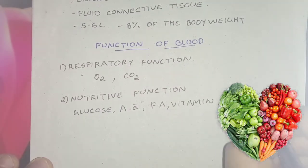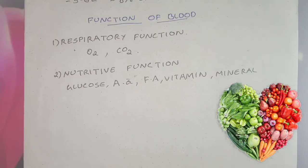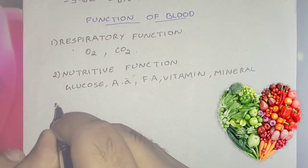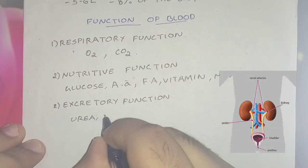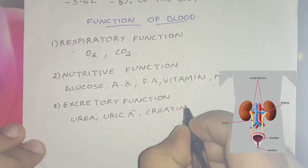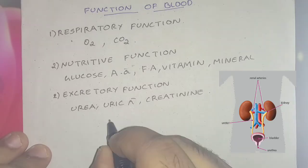The final products of digestion like glucose, amino acids, fatty acids, minerals, and vitamins are taken from the alimentary canal, enter the blood, and reach the tissue. Next is the excretory function. Waste products of metabolism like urea, uric acid, and creatinine